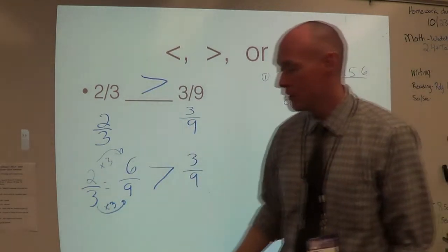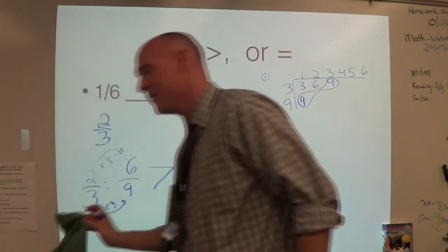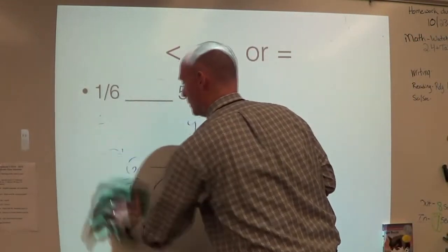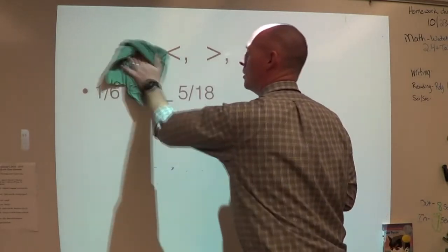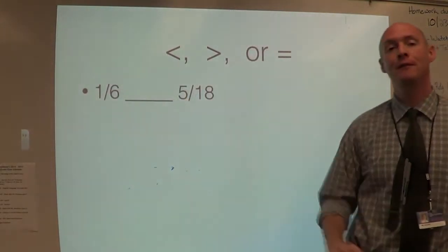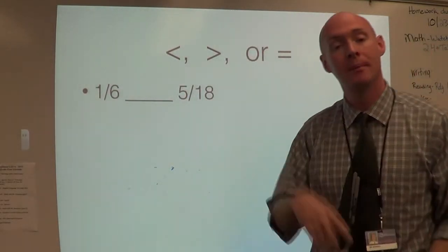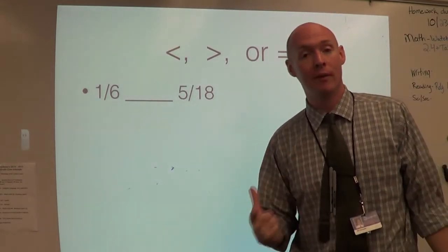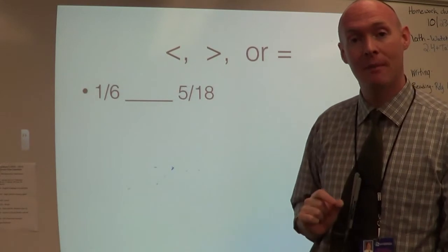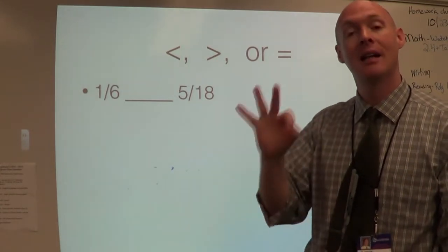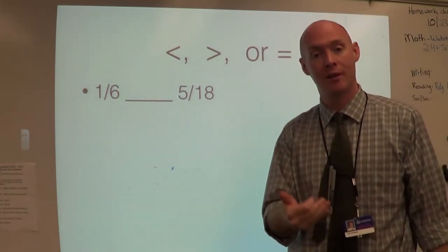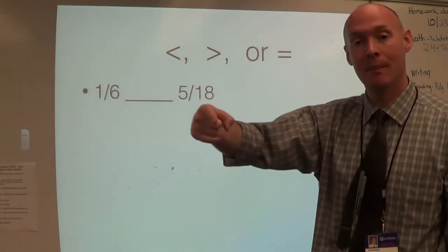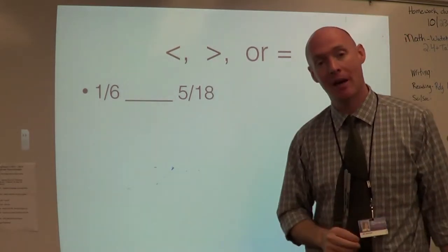I have one for you to try on your own. This is one-sixth and fifteen-eighteenths. Remember: step one, find the least common denominator; step two, make equivalent fractions using the least common denominator; and step three, compare the numerators. If you forget a step, watch back the last two examples — it will show you step-by-step how to do it.